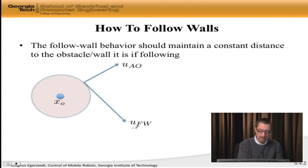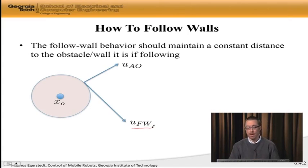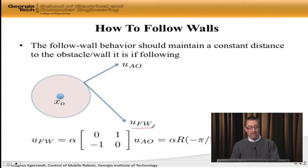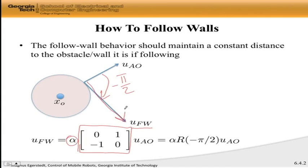Now, I'm going to call this F_W for follow wall. And follow wall is now simply a flip down of 90 degrees, which this curious looking matrix here is actually achieving. And I may want to scale it, so I may have some scaling that's making this longer or shorter.